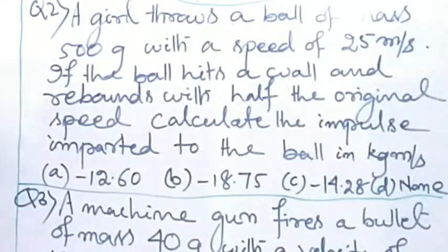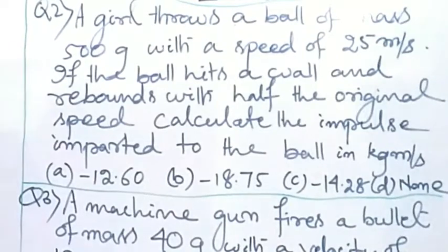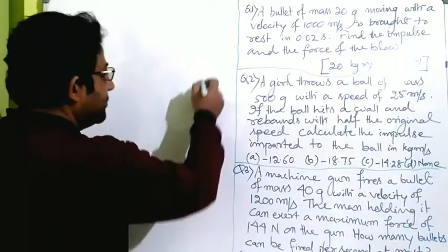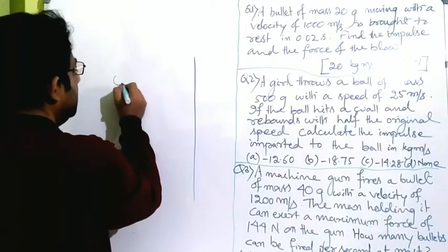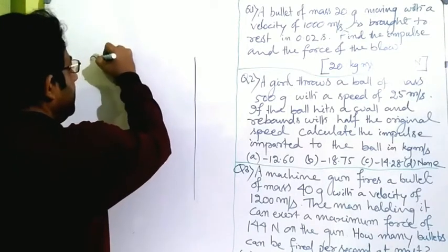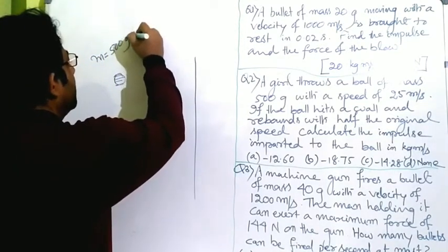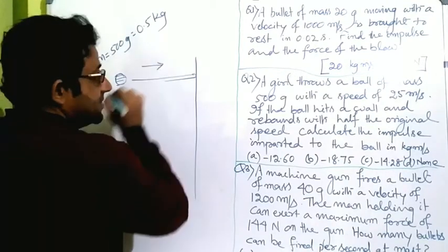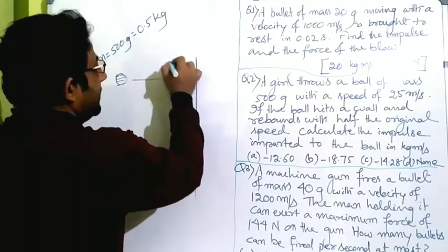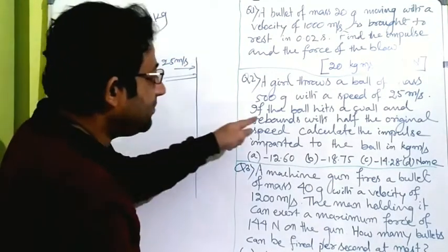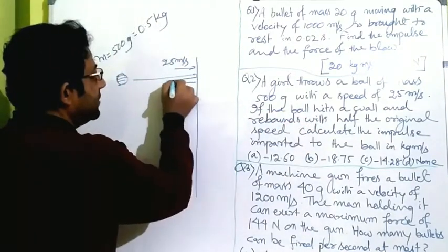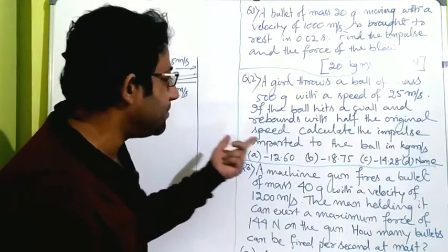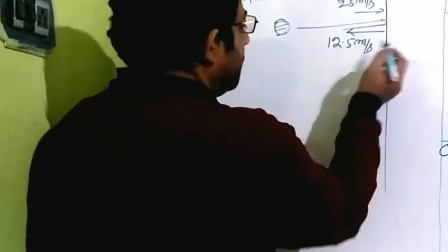The second question: a girl throws a ball of mass 500 grams with a speed of 25 meters per second. The ball hits a wall and rebounds with half the original speed. So mass M equals 500 grams, or 0.5 kg in SI units. The ball hits the wall at 25 meters per second and comes back at half that speed, which is 12.5 meters per second. Calculate the impulse imparted to the ball.